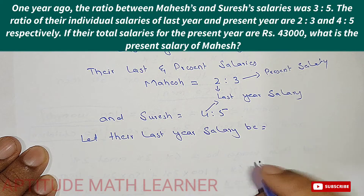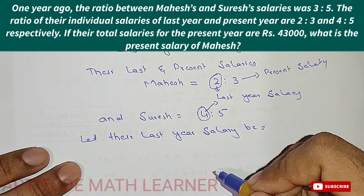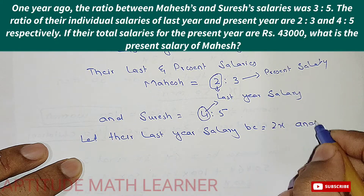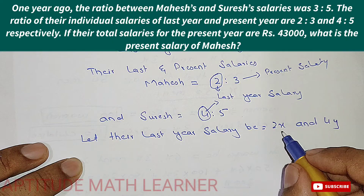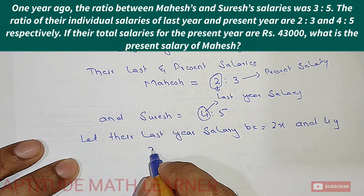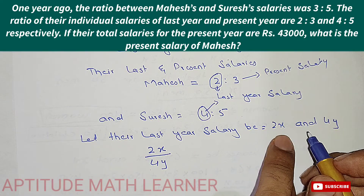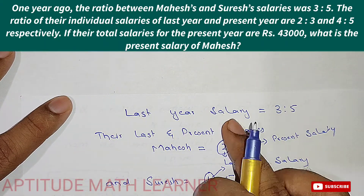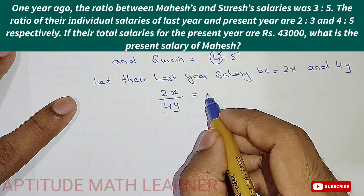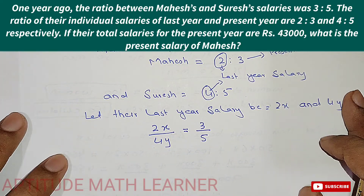The last year salary for Mahesh and Suresh — let their last year salaries be 2x for Mahesh and 4y for Suresh. So the ratio of last year salaries becomes 2x to 4y, which equals the last year salary ratio 3:5.